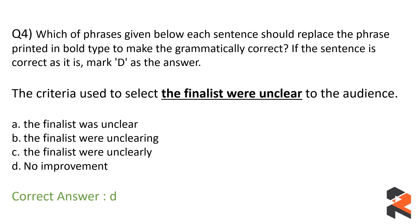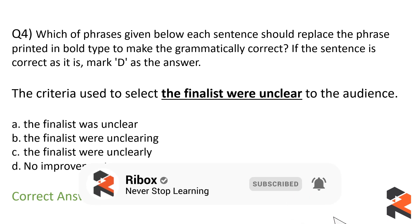The correct answer is option D — no improvement. Reading the sentence: 'The criteria used to select the finalist were unclear to the audience' — it already conveys the meaning we want. There is no option that would improve or change the meaning in a better direction, so there is no reason to replace any part of the sentence. Option D, no improvement, is the answer. I hope you got to know about some of the question types and the concepts behind them. If you liked this video, make sure to subscribe to our channel and click the bell icon for future updates.